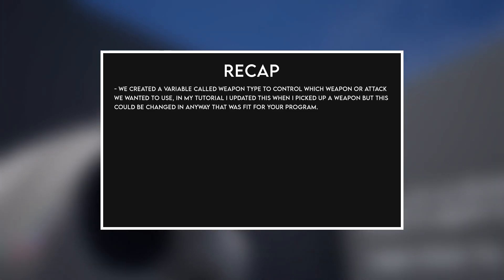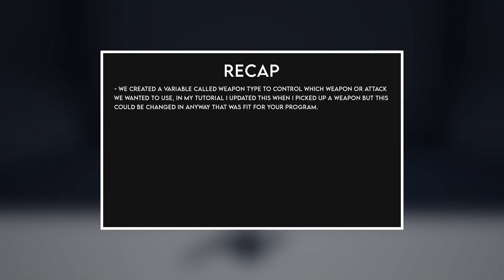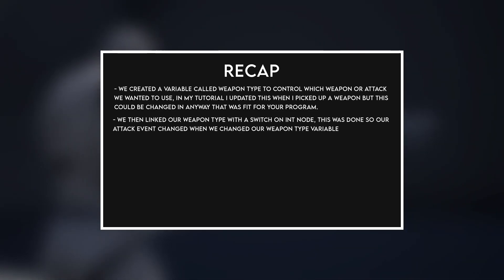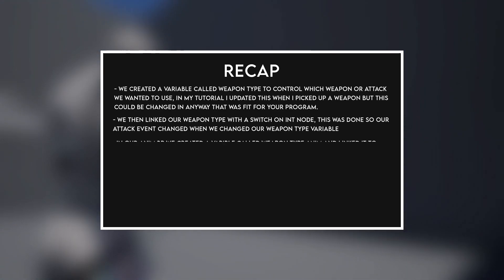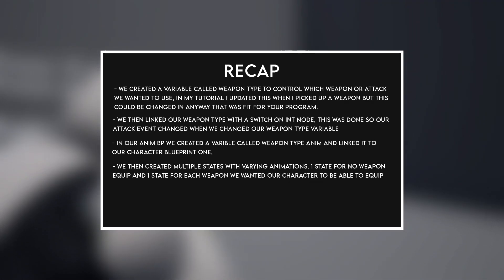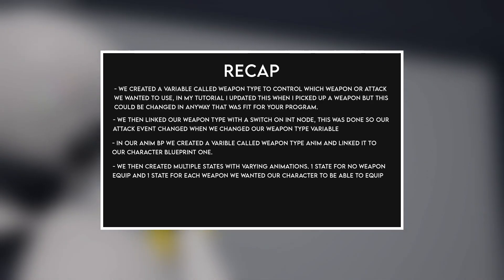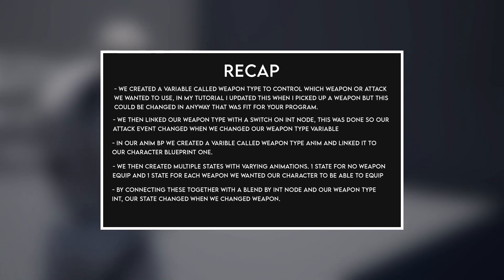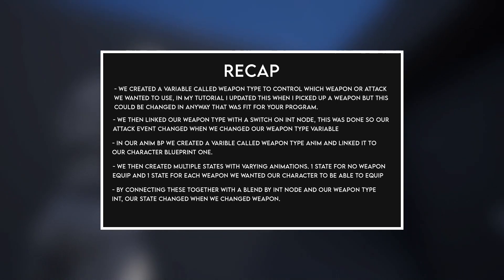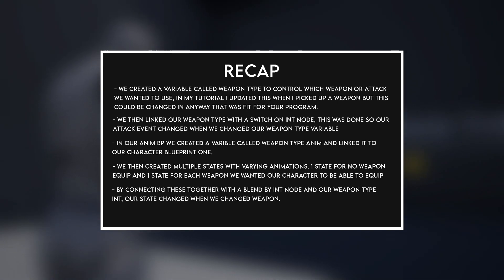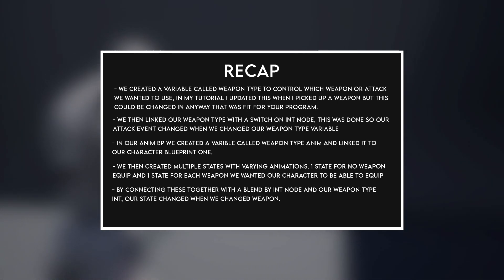Let's quickly recap: we created a variable called 'weapon type' to control which weapon or attack we wanted to use — in my tutorial I changed this when I picked up a weapon, but this could be changed any way that fits your program. We then linked our weapon type with a Switch on Int node so our attack event changed when we changed our weapon type variable. In the Anim BP we created a variable called 'weapon type anim' and linked it to our character blueprint, then created multiple states with varying animations — one state for no weapon equipped and one for each weapon — connecting these with a Blend by Int node. A quick reminder: you only need a new animation state when you want your weapon to be held in a different position to the previous. Thank you so much for watching — like, comment, subscribe, and join my Discord to keep updated with new video releases.